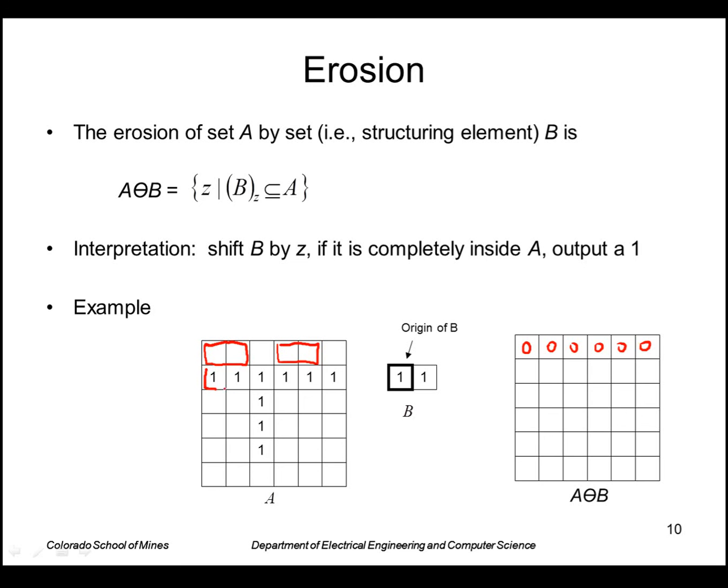When I put B here on the second row, now that location is completely inside A, so I output a one. And similarly, every other place along this row is also completely inside A, with the exception of the last position where it goes outside the set A. So if I assume there's a zero there, then that would be a zero output. The rest of the rows are also zeros because there's no way that I can shift B so as to output a one completely inside A. So that would be the erosion of A by B.